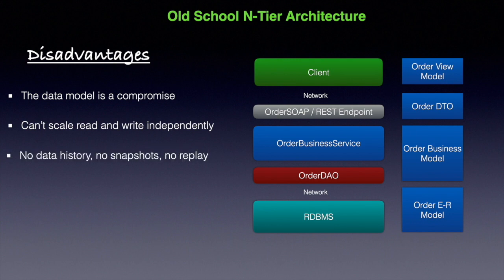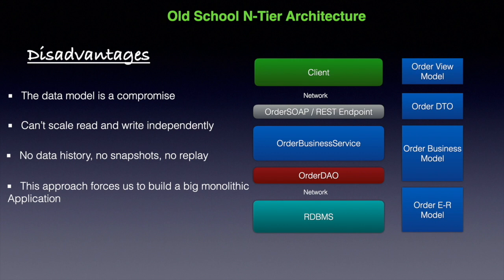The third problem is no data history, no snapshots, no replay. If you make a change or update a value in a table, the old value is gone once the transaction is committed — there is no history. You can't roll back the application and ask the state of the application from yesterday at a specific time. This approach also forces us to build a big monolithic application, deploying all components together as a coarse-grained unit. To address all these problems, there is an architecture called event sourcing.